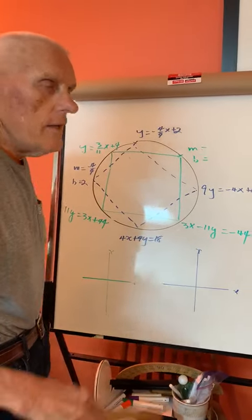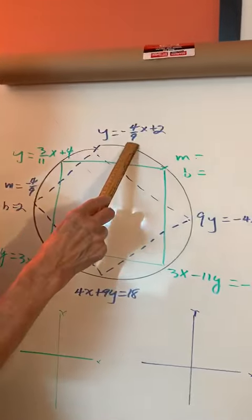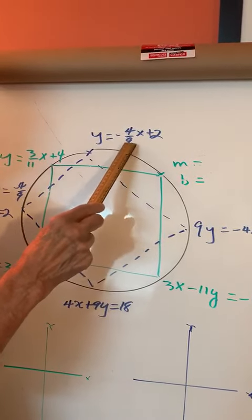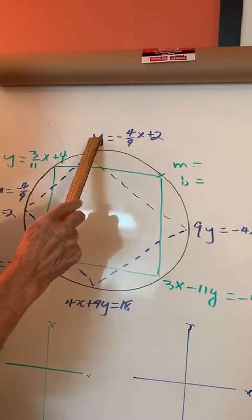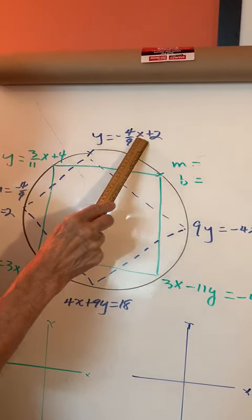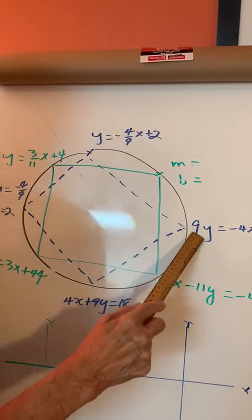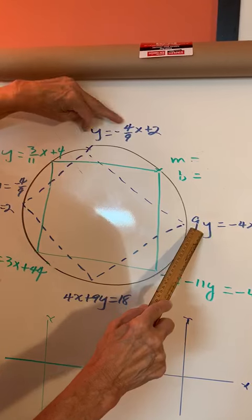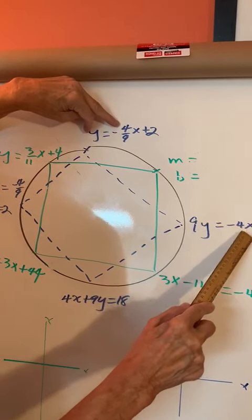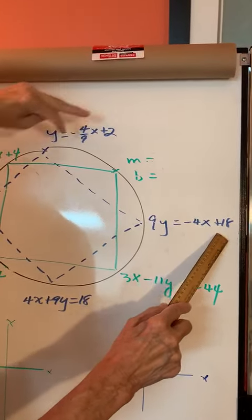Looking at different views of the line y = -4/9x + 2. If I multiply this by 9, and this, and this, I end up with 9y—the nines cancel—and this times 9 is 18.